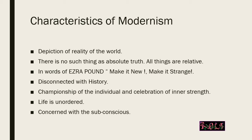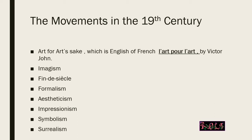Modernism was disconnected from history because the modernists were cut off from the past and wanted to create something new. The modernist movement is an amalgamation of many sub-movements. One is 'Art for Art's Sake,' from the famous French modernist, which meant that art should not be used for preaching religion or imparting political views on people.